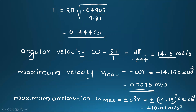Angular velocity ω equals 2π divided by T equals 2π divided by 0.444 equals 14.15 radian per second. Maximum velocity equals minus ω times R equals minus 14.15 times 15 × 10⁻³ equals minus 0.75 meter per second. Maximum acceleration equals plus or minus ω² times R equals plus or minus 14.15² times 15 × 10⁻³ equals plus or minus 10.011 meter per second squared.